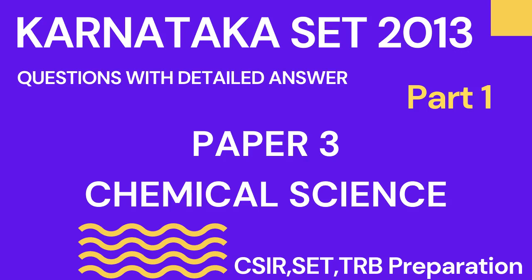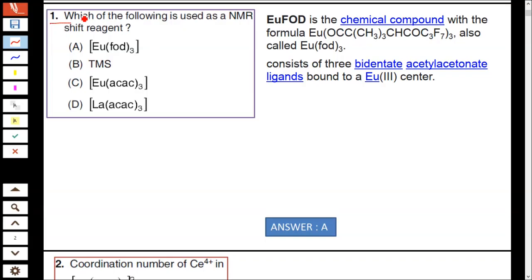Welcome to Diagnostics YouTube channel, Karnataka SET 2013 Part 1 Paper 3. Question number 1: Which of the following is used as an NMR shift reagent? TMS was not used as a shift reagent, and lanthanum was not used as a shift reagent. We know that Europium Eu³⁺ was used as a shift reagent in options A and C. EuFOD, with the formula Eu(OCC(CH₃)₂CHCOC₂F₇)₃, is a bidentate acetylacetonate ligand bound to a Eu³⁺ center, acts as a shift reagent in NMR.